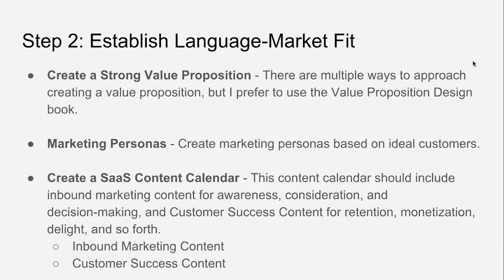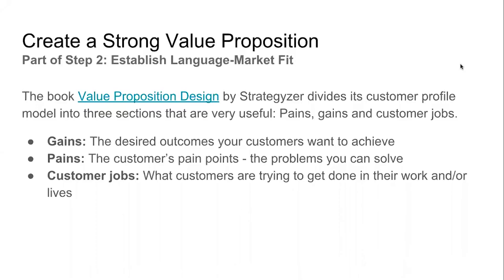This calendar should include inbound marketing content for awareness, consideration, and decision making, and customer success content for retention, monetization, delight, and so on. You want to bring both together to create a unified SaaS content calendar that gets potential customers interested in your product and keeps current customers staying interested. In Value Proposition Design, it goes through gains, pains, and customer jobs. Gains are the desired outcomes your customers want to achieve. Pains are the customer's pain points — the problems you can solve. Customer jobs are what customers are trying to get done in their work and or lives.